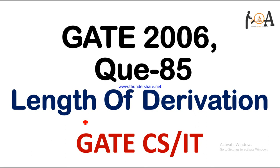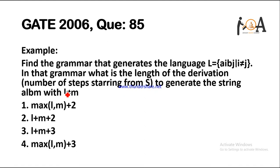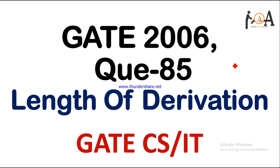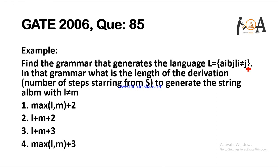The question was on length of the derivation. The question says find the grammar that generates the language L equals A to the power I, B to the power J, where I doesn't equal J. In that grammar, what is the length of the derivation—the number of steps starting from S to generate the string A to the power L, B to the power L? Basically it is A to the power L, B to the power M, with L does not equal M.